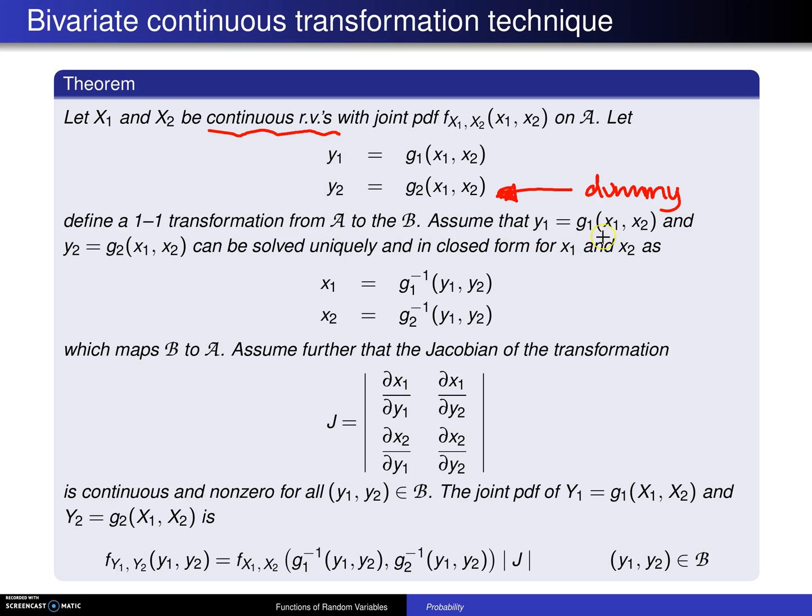Assume that Y1 equals g1 of x1, x2 and Y2 equals g2 of x1, x2 can be solved uniquely and in closed form for x1 and x2 in the following fashion, which maps script B to script A. Again, a slight violation here in notation with the negative 1 for inverse.